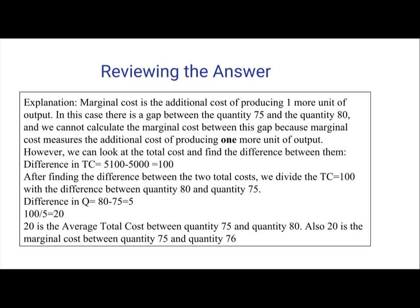20 is the average total cost between quantity 75 and quantity 80. But, with 20, it's also the marginal cost between quantity 75 and quantity 76.